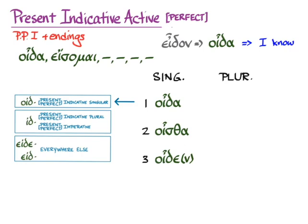Then in the plural, we switch to the other stem, id, and we get ismen, again with the delta changed to a sigma, iste, and isasi with a nu movable.